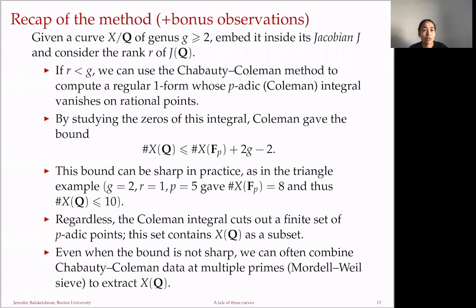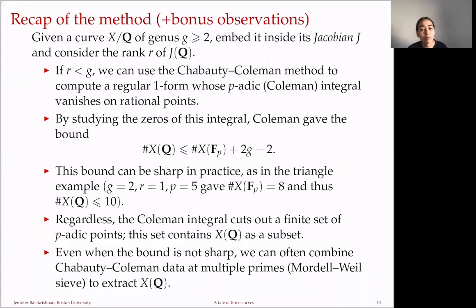When there is a discrepancy between an upper bound and the number of known rational points, there is a good method of sieving. You compute Chabauty-Coleman data at a collection of favorable primes, then use conditions on the Jacobian at these various primes to sieve out the fake points—points that are not honestly rational. In practice, this works quite well to give you the set of rational points.